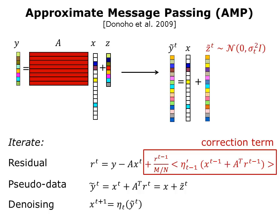The next tool we introduce is approximate message passing, or AMP. AMP iterates over three steps. Step one: calculate the residual, which is primarily the unexplained portion of the measurements — y minus the matrix A multiplied by the estimate of the input signal x in iteration t — and there is also a correction term which you can read about in our paper. Step two: the pseudo-data, which statistically equals the original x plus Gaussian noise. And finally, step three: denoising. We take the pseudo-data and apply a denoiser eta_t, which is our adaptive Wiener filter, and the output of that filter is the estimate of x in iteration t plus 1.